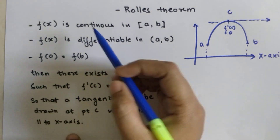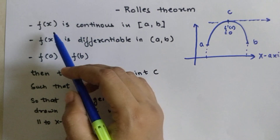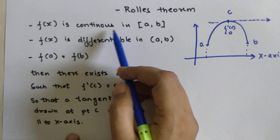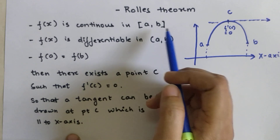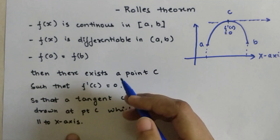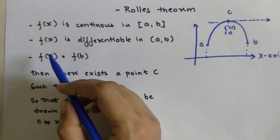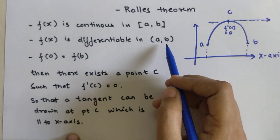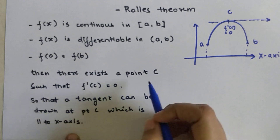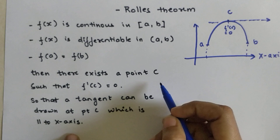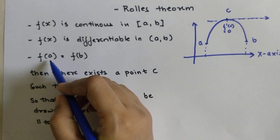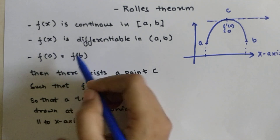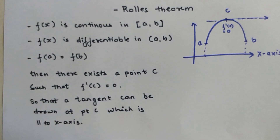The prerequisites for Rolle's Theorem are: first, f(x) must be continuous in the closed interval [a, b]. The second prerequisite is that f(x) must be differentiable in the open interval (a, b). The third prerequisite is that f(a) must equal f(b).